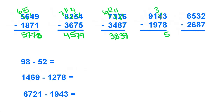3 minus 7, can't do that, borrow from the 1, make that a 0, make that a 13. 13 minus 7 is 6. 0 minus 9, borrow from the 9, make that an 8, make that a 10. 10 minus 9 is 1. And 8 minus 1 is 7.